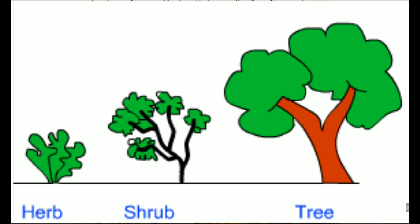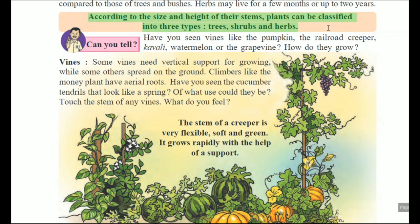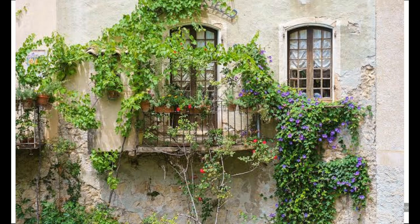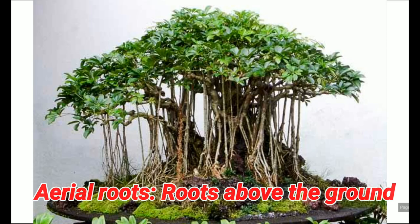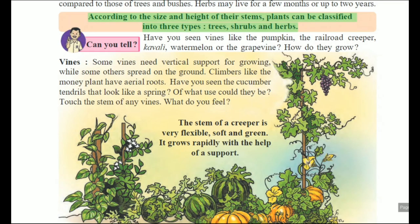Now the next point is vines. Some vines need vertical support for growing while some others spread on the ground. Vines are nothing but climbing plants, so they require a support. Climbers like the money plant have aerial roots. Have you seen cucumber tendrils that look like a spring?